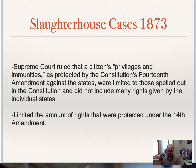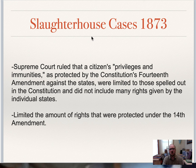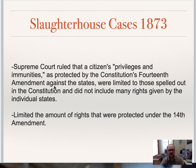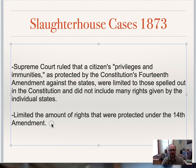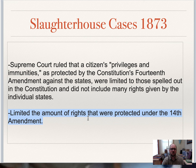In 1873, the Supreme Court further pushed back on Black rights in the Slaughterhouse Cases. The Court ruled that citizens' privileges and immunities protected by the 14th Amendment against states were limited only to those spelled out in the Constitution, not the many rights given by individual states. In effect, this limited the scope of 14th Amendment protections and allowed Southern whites to legally discriminate against African Americans in more ways.